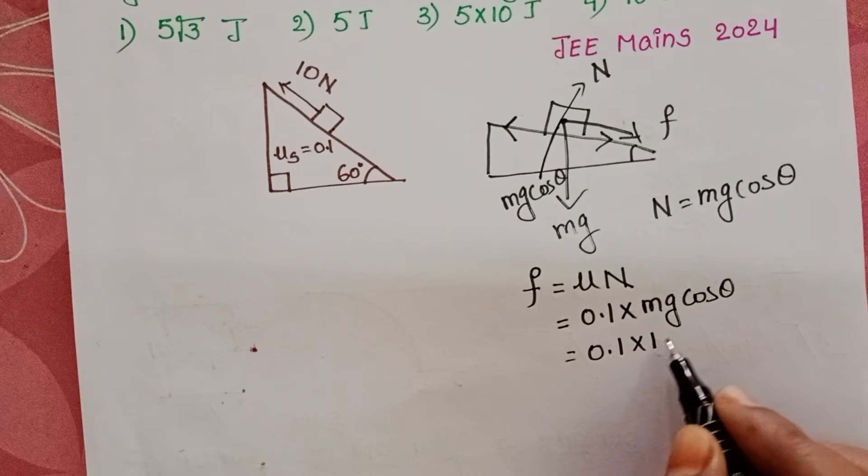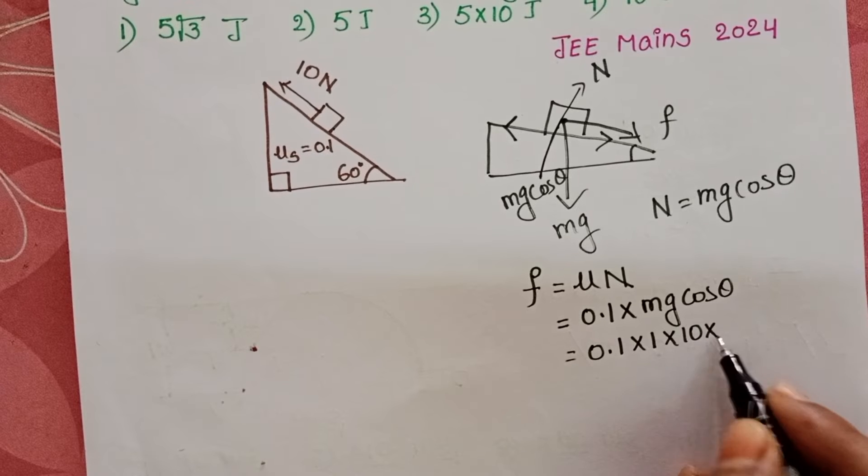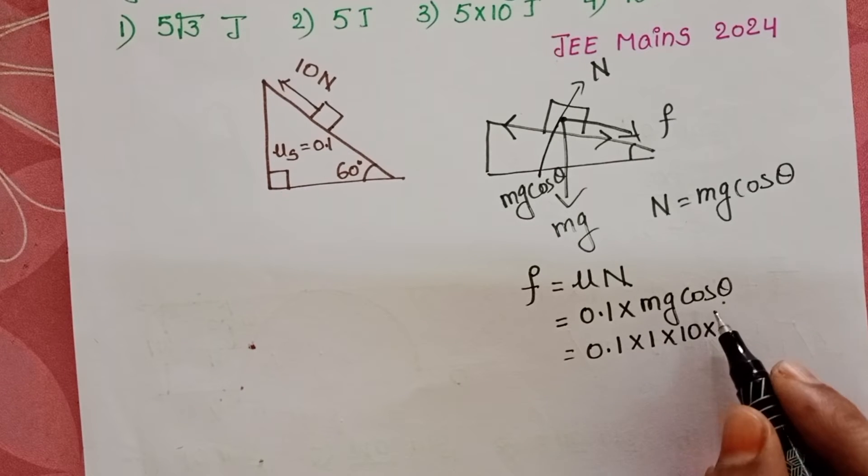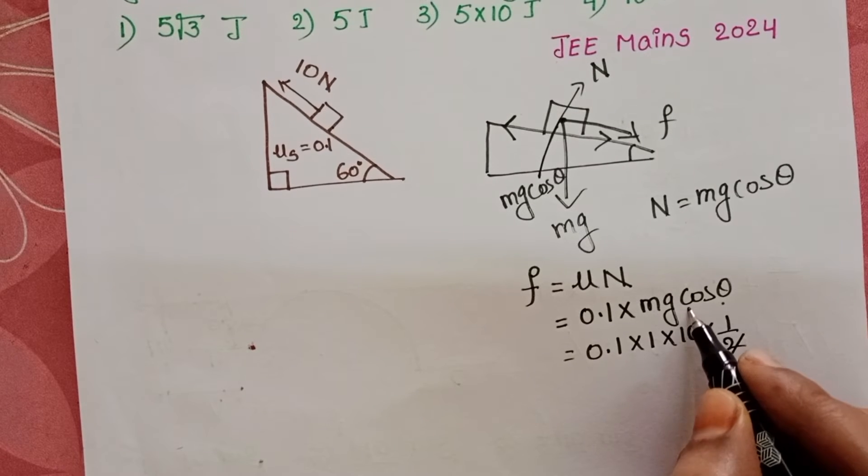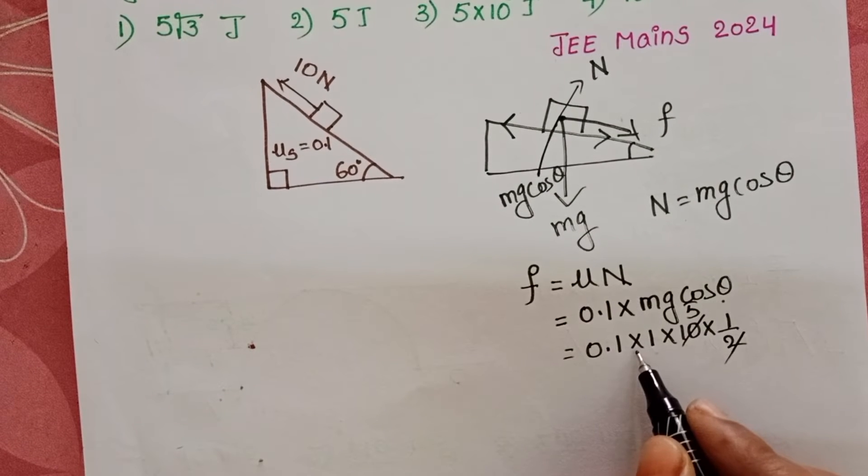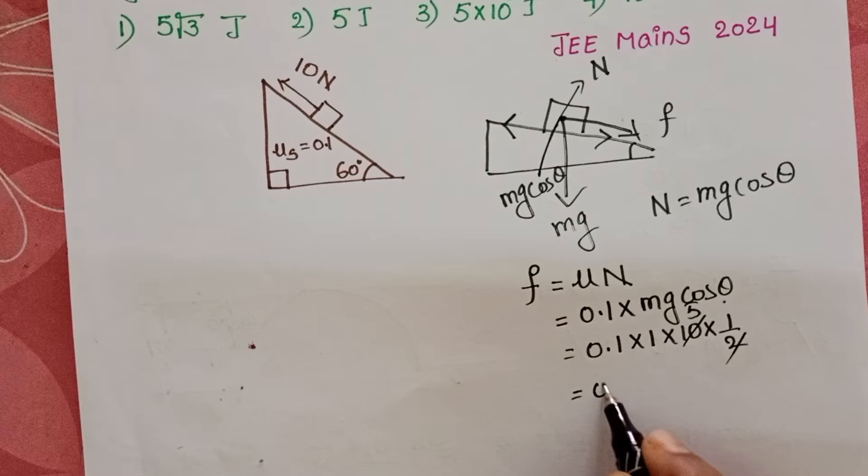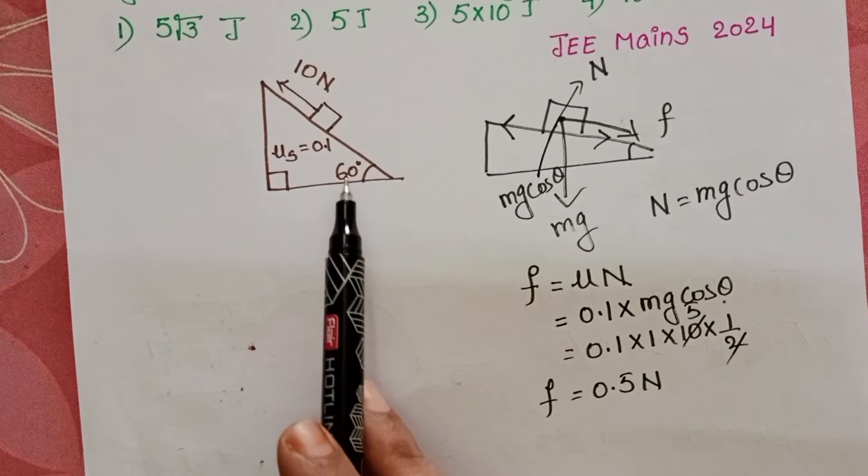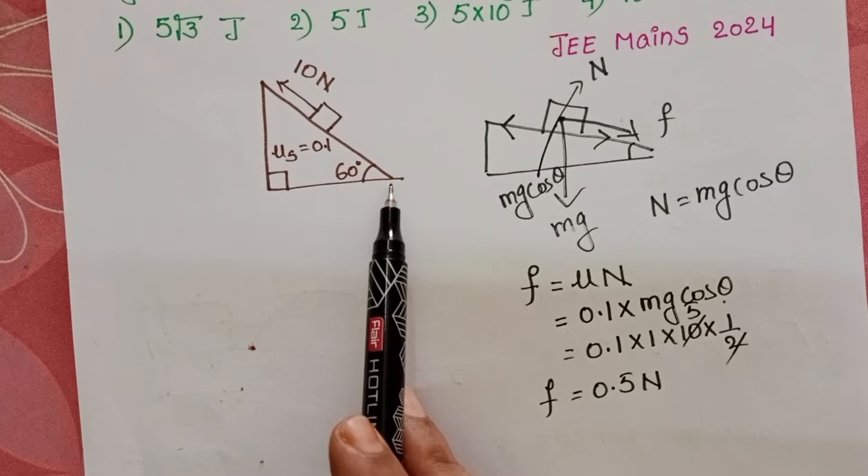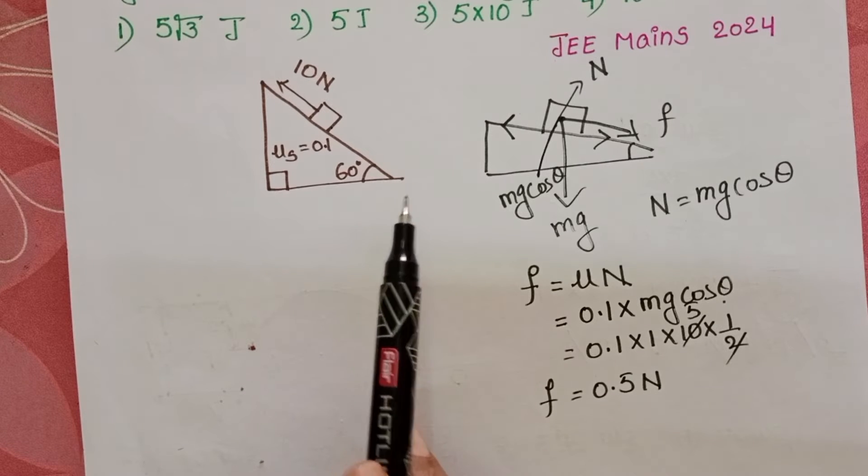Mass of the block is 1 kg, g value is 10, and θ is 60 degrees. Cos 60 value is 1/2. So 0.1 × 1 × 10 × 1/2 equals 0.5 N. Frictional force acting along the inclined plane in downward direction is 0.5 N.